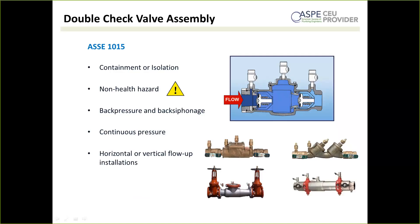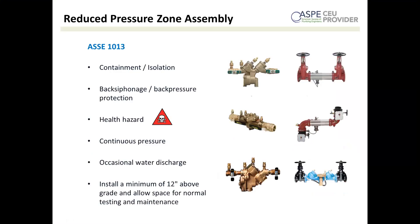For health hazard applications, we use a reduced pressure zone assembly. Other than an air gap, this affords the highest possible degree of protection. It's used for containment or isolation, handles back pressure and back siphonage, and is rated for health hazard applications as well as continuous pressure. The downside is that it will occasionally discharge water, and in a catastrophic event can discharge quite a bit — potentially causing flooding. It must also be installed a minimum of 12 inches above grade and typically cannot be installed vertically. It has test cocks and shutoffs like the double check — it's also an assembly.